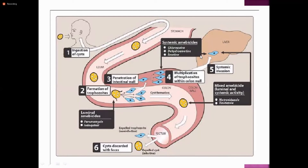We have systemic amoebicides that affect not only the GIT but also the liver — wherever the trophozoite form is present. We have luminal amoebicides that affect only the GIT lumen, targeting the cyst form. And we have mixed amoebicides, which cover both — killing both trophozoites and cysts. Metronidazole and tinidazole belong to this mixed category.